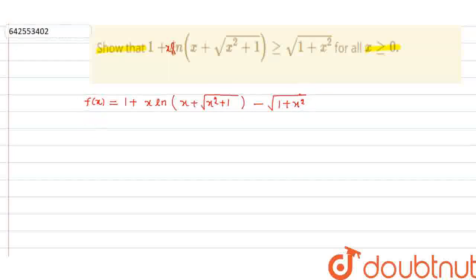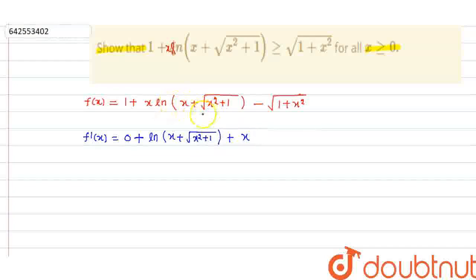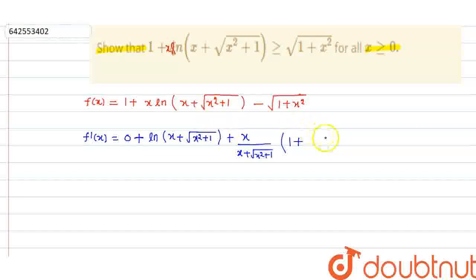Now differentiate one time. So f'(x) will be: using the product rule (u·v rule), this will be ln(x + √(x²+1)) plus x times the differentiation of that total, divided by (x + √(x²+1)), multiplied by the derivative inside, which is 1 plus x divided by √(x²+1), minus x upon √(x²+1).